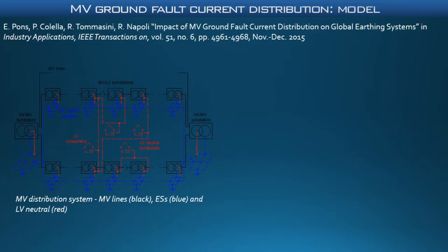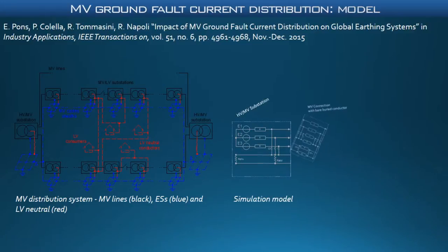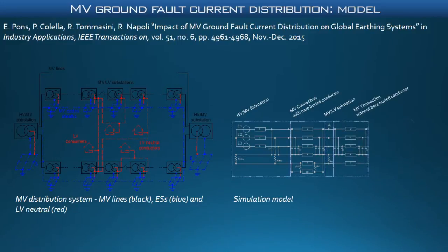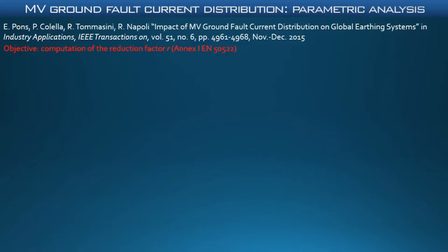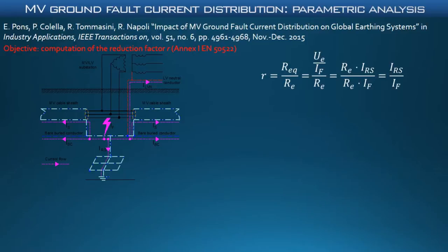In order to quantify the phenomenon and evaluate the most relevant factors of influence, an analytical model of the components of a generic MV distribution system, as the one reported on the left of the slide, has been used for the simulation of a single line to ground fault. This model is very versatile, as the blocks describing the different components of the MV network can be assembled to represent the desired MV distribution system. The full model can be solved using the node method to calculate the currents in all branches and voltages in all nodes. To judge the effectiveness of the interconnection from the point of view of the current distribution among substation ground grids and other paths, the ratio R-equivalent over RE is used, where R-equivalent is the equivalent resistance seen by the fault current and RE is the ground grid earth resistance of the faulted substation. It is possible to demonstrate that this ratio is equivalent to the current injected into the soil through the earthing system of the faulted substation divided by the total fault current. The ratio R is therefore a measure of the advantages achieved thanks to the interconnection of the substation ground grids.